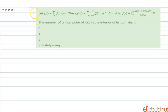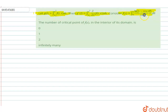Welcome to Doubtnut. In this question, given let g(t), g is the function, limit x1 to x2, f(x³) ds, then g'(t) can be written in this format. And consider f(x) is equal to limit 0 to π, ln(1 + x cos θ) / cos θ dθ, then the number of critical points of f(x) in the interior of its domain.